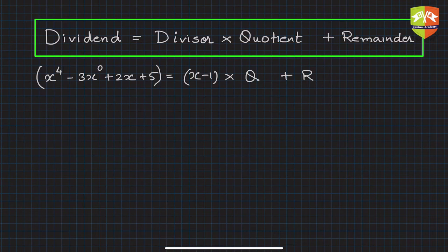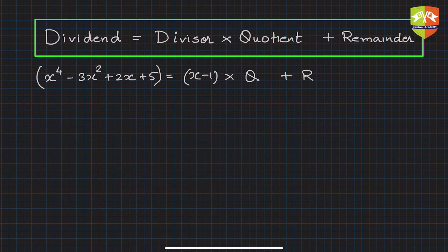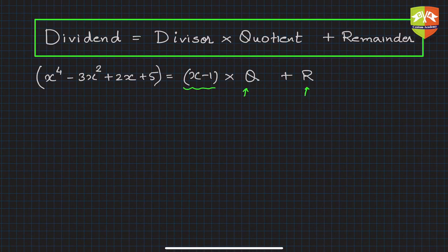Let's understand with an example. I've taken the polynomial x⁴ - 3x² + 2x + 5, and I want to divide this by (x - 1). So the divisor is (x - 1). Let's say the quotient after division is q and the remainder is r. Since we are equipped with synthetic division, we'll use that method.